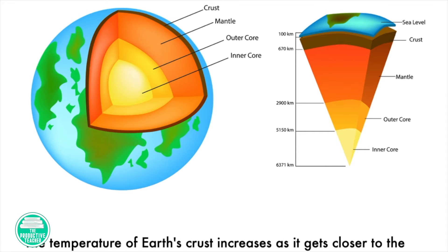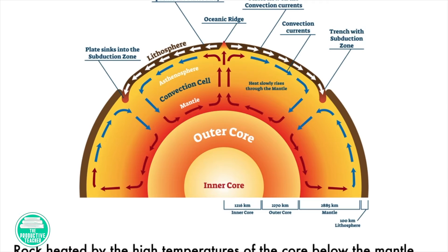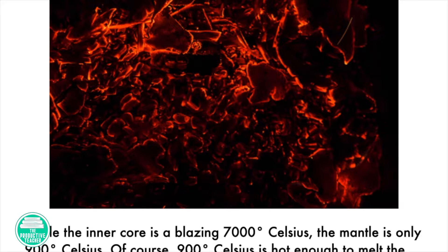The temperature of Earth's crust increases as it gets closer to the mantle. The mantle is heated by the outer core. Rock heated by the high temperatures of the core below the mantle slowly rises to the top of the mantle. While the inner core is ablaze at 7,000 degrees Celsius, the mantle is only 900 degrees Celsius. Of course, 900 degrees Celsius is hot enough to melt the rocks of the crust that come near the mantle.